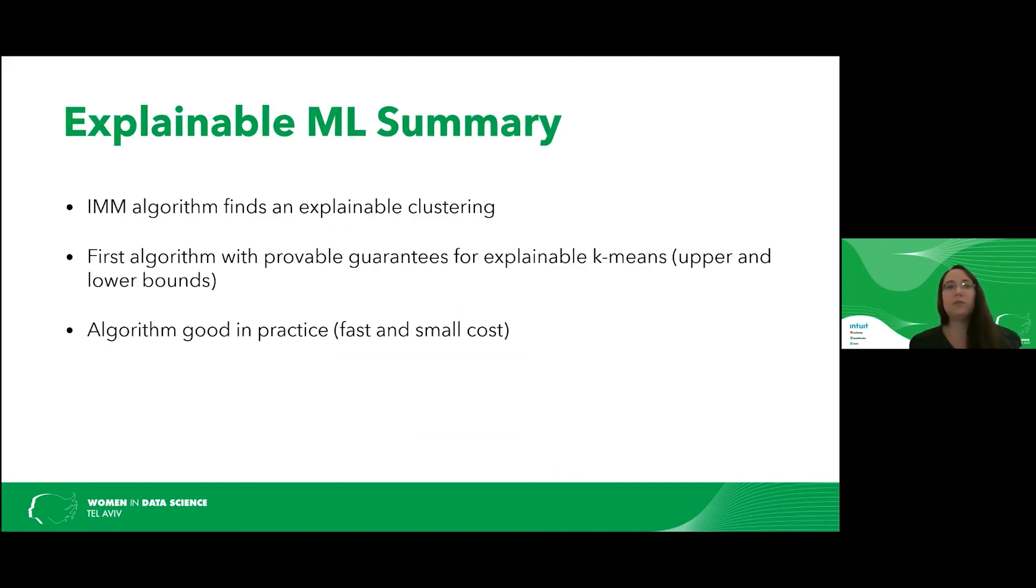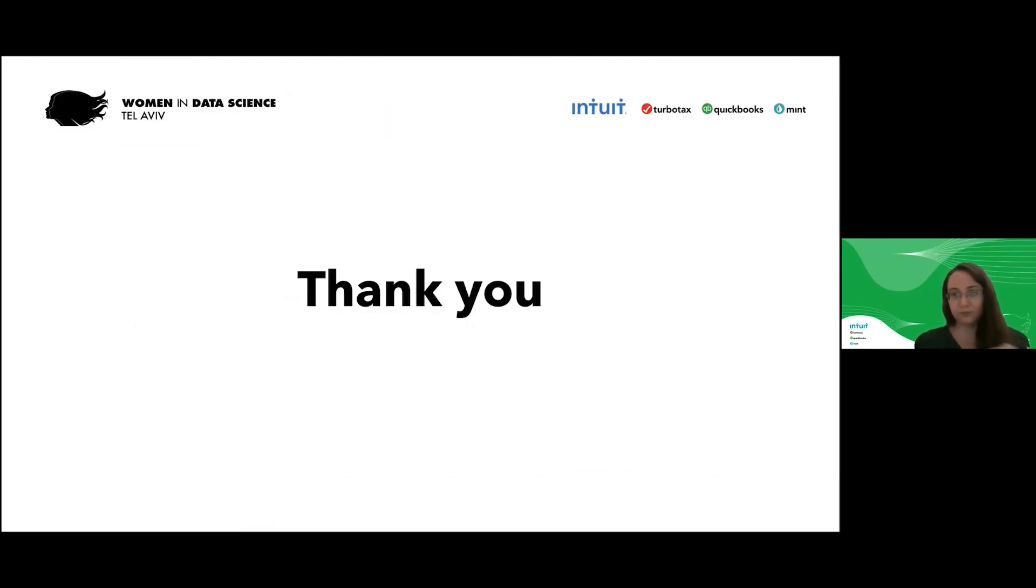So just to summarize that, we designed a new algorithm, the IMM algorithm, that finds an explainable clustering. This is the first algorithm with provable guarantees for explainable k-means. We showed some upper bounds and some lower bounds. And what we saw is that this algorithm is good in practice, fast, and it has small cost. So next time that you need a clustering algorithm, why not use this one? Get explainability for free. Thank you.